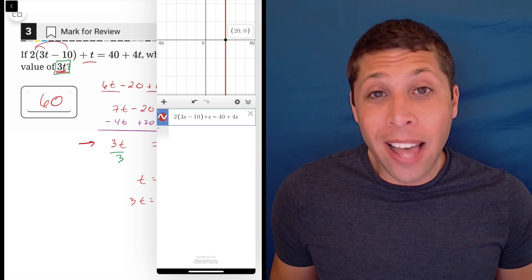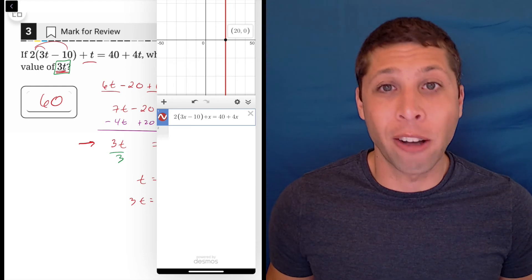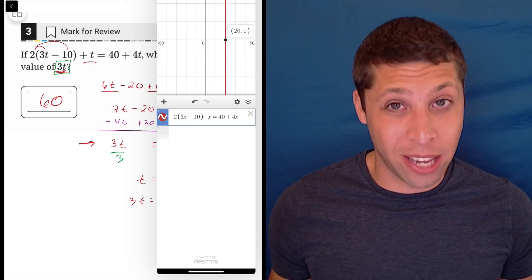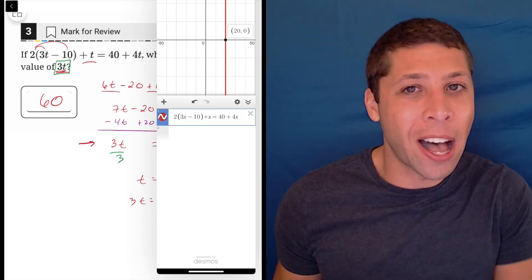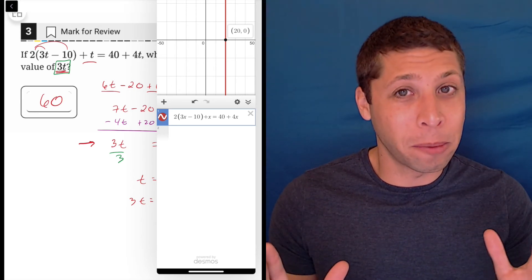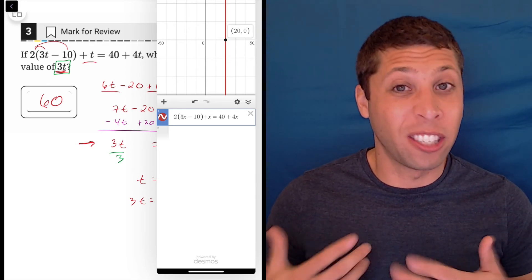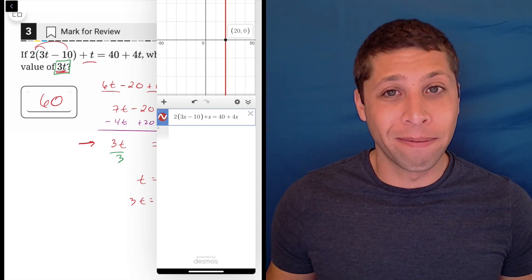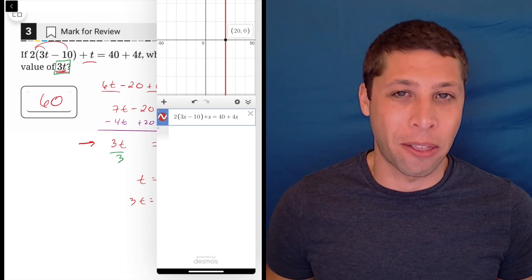But maybe that's a new strategy is instead of doing algebra, you let the graphing calculator just graph you the answer. You've got to be able to read that and understand that that 20 is what the value of t is, because we only have one variable in our equation. But if you can get comfortable with that, maybe some of this algebra just disappears entirely. And that might be good. I think we need more new tests to see how well this method works.